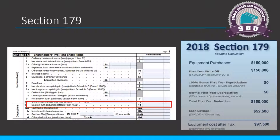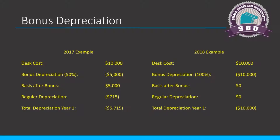Now let's jump into bonus depreciation, because this one you're going to use a ton. Bonus depreciation is exactly what it sounds like — an extra bonus you can take in the first year that you purchased an asset. Before 2018, the normal bonus depreciation percentage was 50%. That meant if you purchased a $10,000 desk, you could take 50% — $5,000 — as bonus depreciation and expense that. Then you would also start normal depreciation, but the basis for your normal depreciation started at $5,000 because that was the remaining basis.